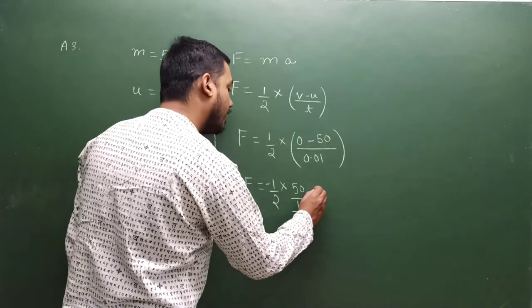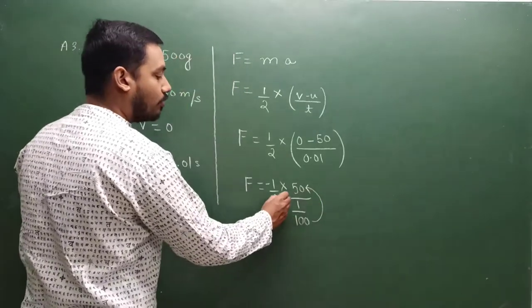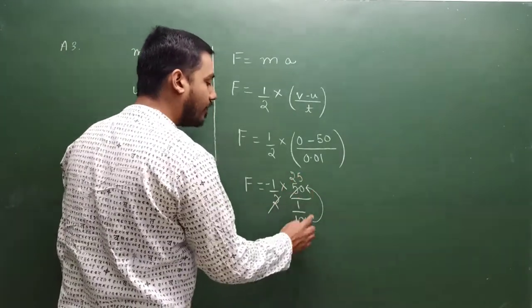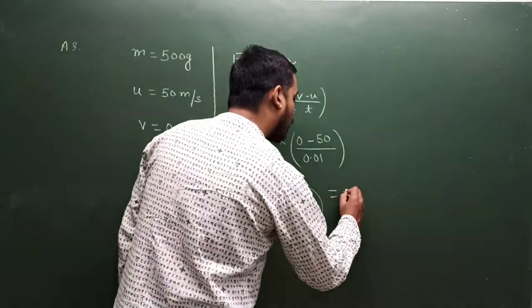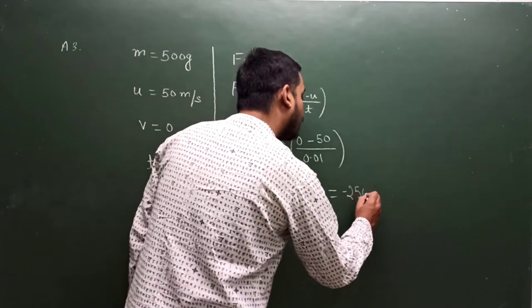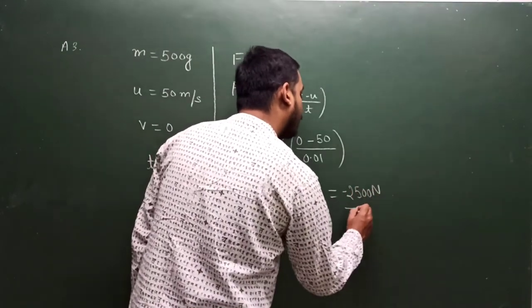Aur yeh hundred kahan chalai aega? Upar yeh two isko cancel karega, two one ho, fifty ho. Fifty into hundred, so aap kahan answer aagya? Minus twenty five hundred newton.